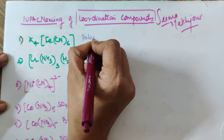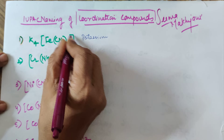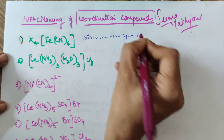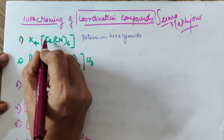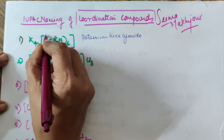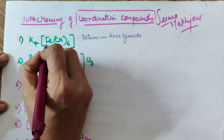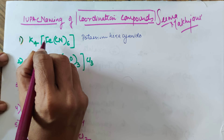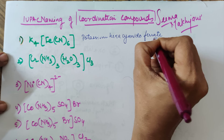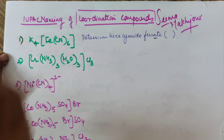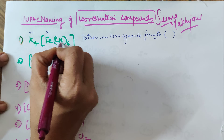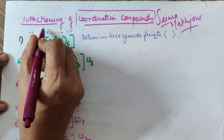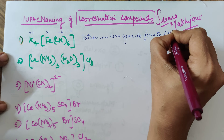The name of this first compound starts with potassium. Then we come to the square bracket: CN appears six times, so it is hexacyanido. Now, iron — since the square bracket is the anion, the name of the central atom iron changes to ferrate, with 'ate' added. You must mention the oxidation number: each CN has a charge of minus 1, so minus 6 total; to get net charge zero, x comes out to be plus 2, written in Roman numerals.